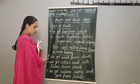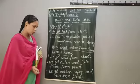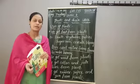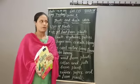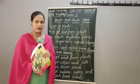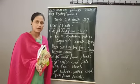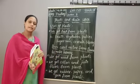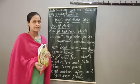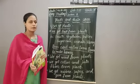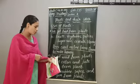Second point: we get wood from plants. Wood is used to make furniture for our house, to build our house, and also to make pencils.